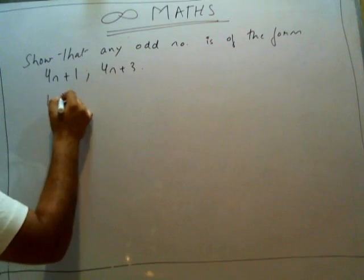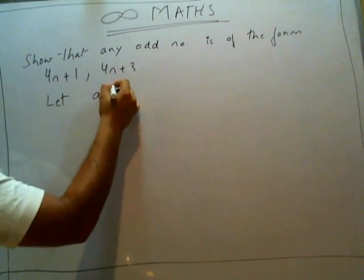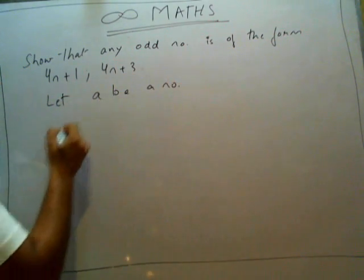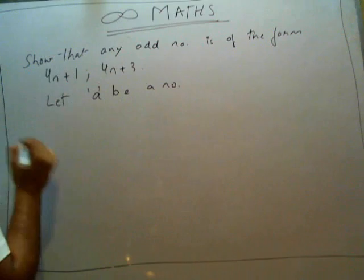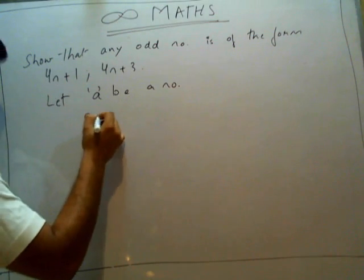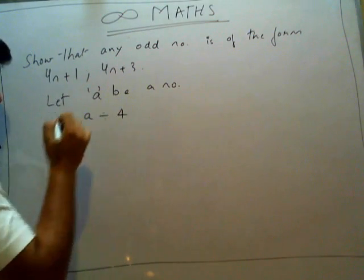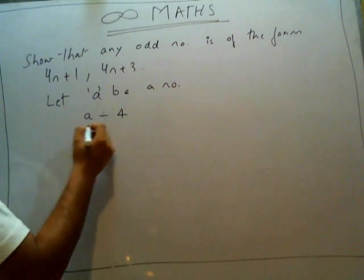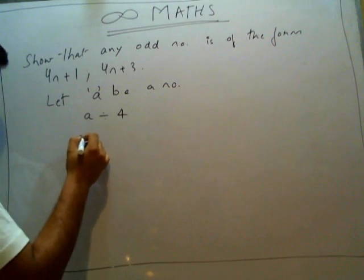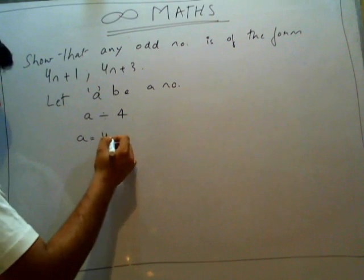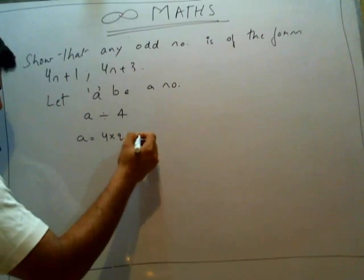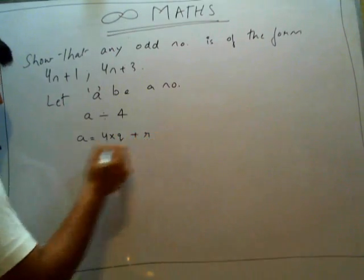Let A be a number. Now, when A is divided by 4, you can see that A equals 4 times some quotient Q, plus a remainder.